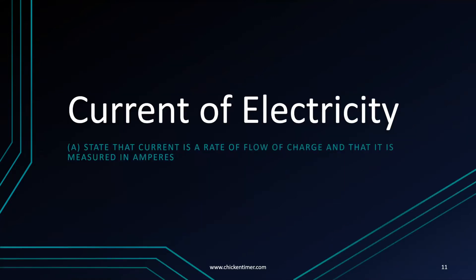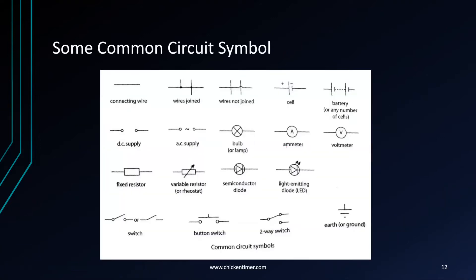Coming to electricity, you must know how to state that current is the rate of flow of charge — that is the definition of current. You must also know that the unit for current is amperes. This section covers the definition and unit for current, along with some revision.